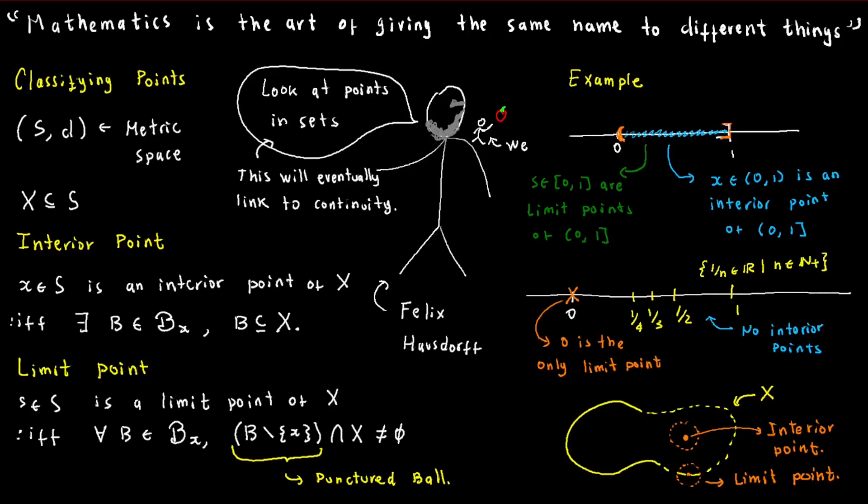However, there is only one limit point and that's zero. Even though zero isn't technically in the set, every puncture ball around it intersects the set. It's like no matter how hard zero tries to avoid the set, it cannot.